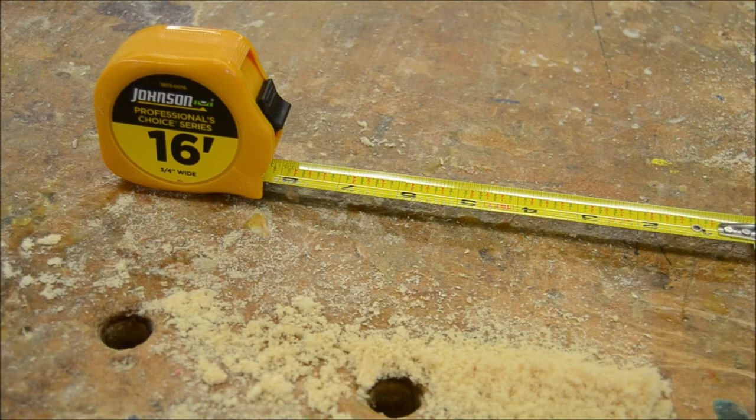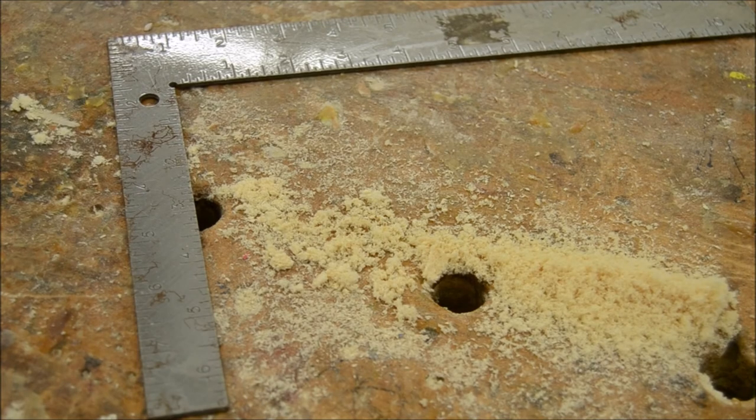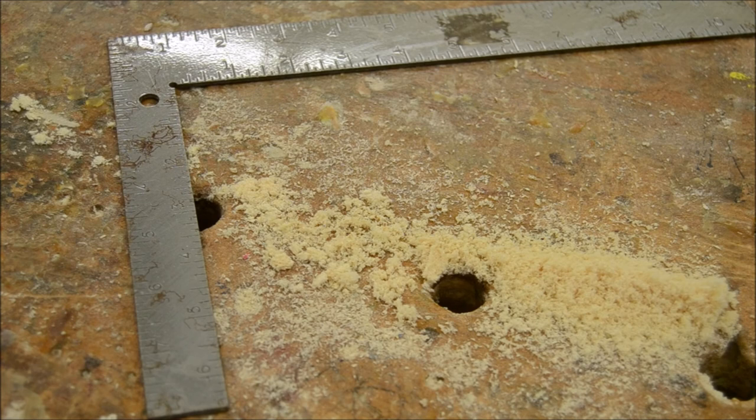We've got the tape measure for measuring and marking lengths. And the square which is a special ruler with a 90 degree corner on it is great for drawing straight lines perpendicular to the edge of a board.